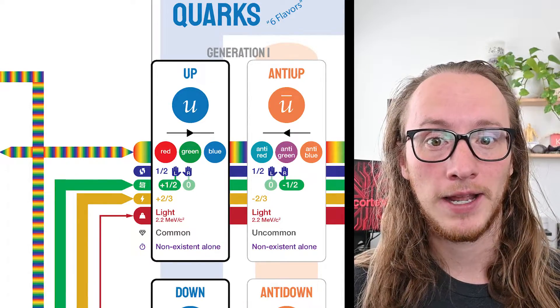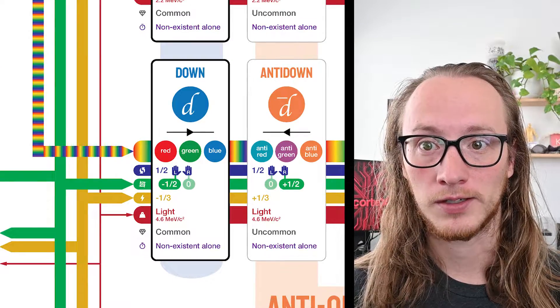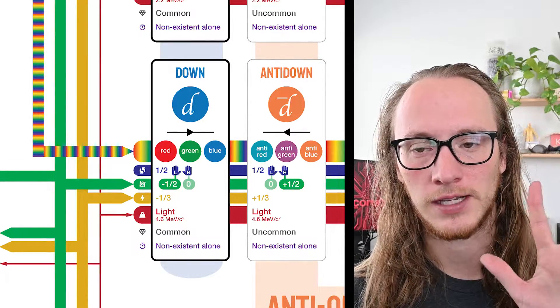For example, you and I are made of up quarks and down quarks. If you look at your hand, up and down quarks, right here, lots of them.